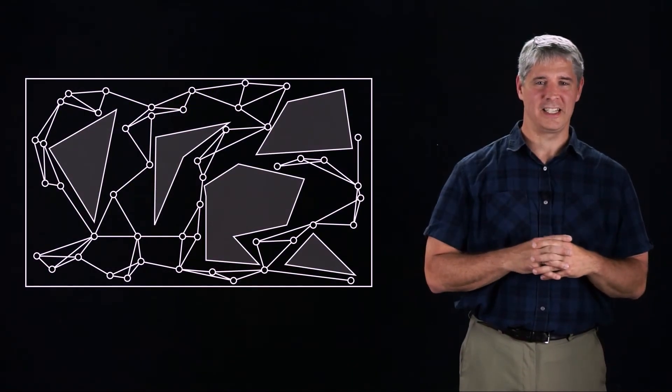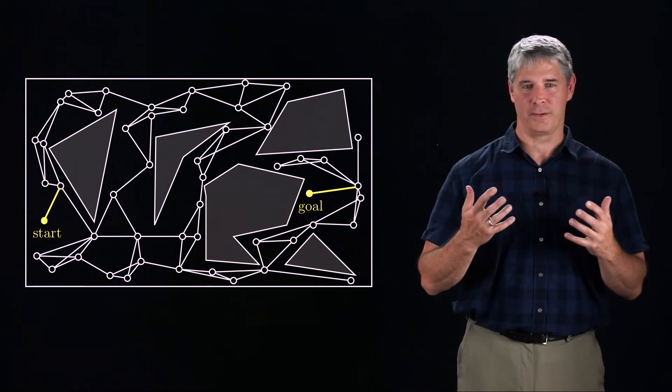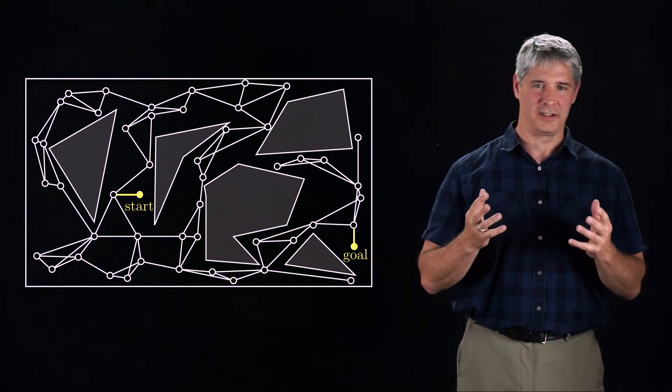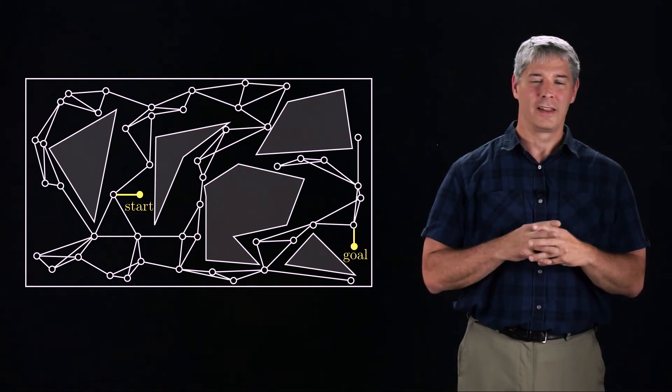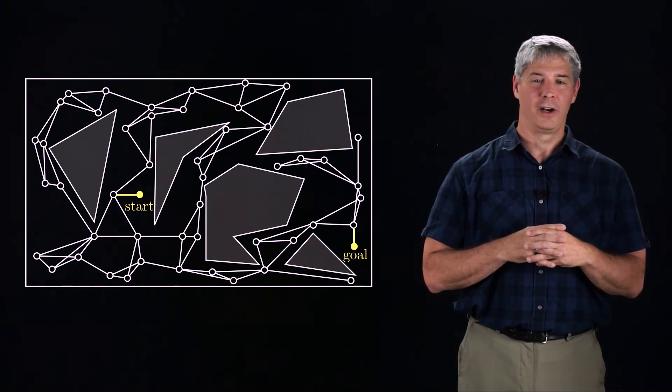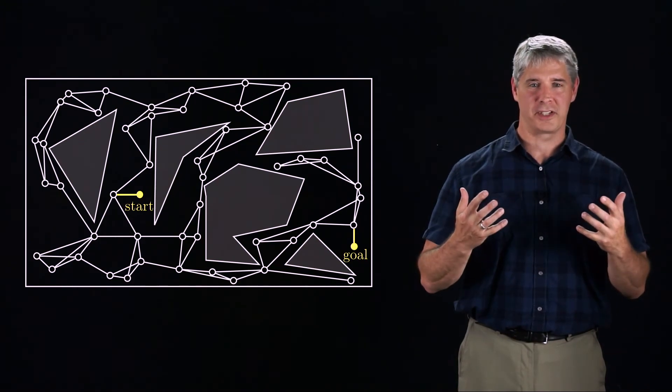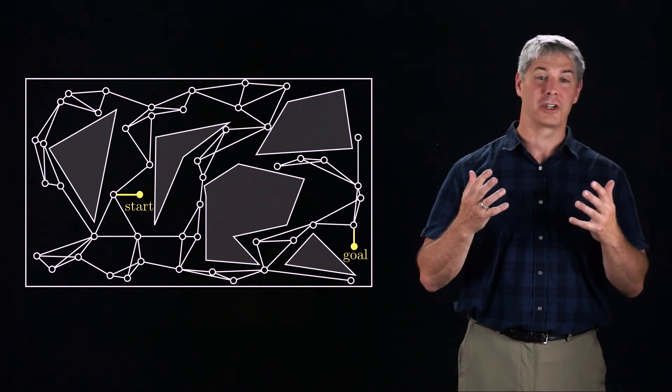Once we've preprocessed the C space by generating the PRM, we can solve different path planning problems by connecting different start and goal configurations to the PRM, as you see here, and using A-star search to find a good path through the PRM. Thus, the PRM planner is usually thought of as a multiple query planner. We invest time to generate a good representation of the free C space, so we can then efficiently solve several motion planning problems.